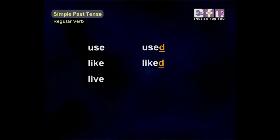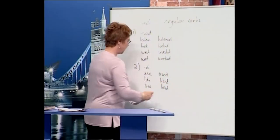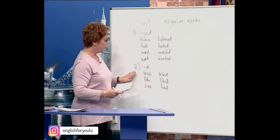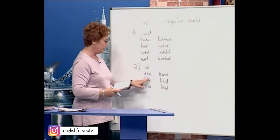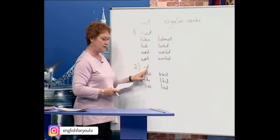So for verbs that already have 'e', we only add 'd'. So we have use, used; like, liked; live, lived.